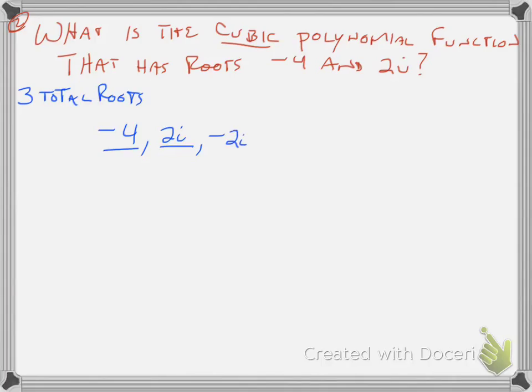I don't use the conjugate or the opposite of the negative 4, because it is rational, and it is not imaginary. So in order to write the polynomial, you're going to do just like you did earlier, is first write it in factored form, x minus each root, so it's x minus negative 4, that's going to become x plus 4, x minus 2i, and then x minus negative 2i, which is going to be x plus 2i.